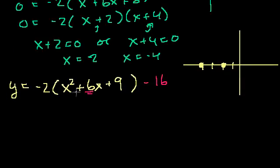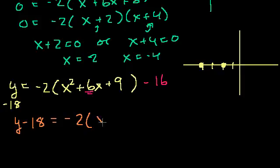If I subtract 18 from the right-hand side, I also have to do it from the left-hand side. So subtract 18 there. And now my equation becomes y minus 18 is equal to minus 2 times, what is this? This is x plus 3 squared minus 16.